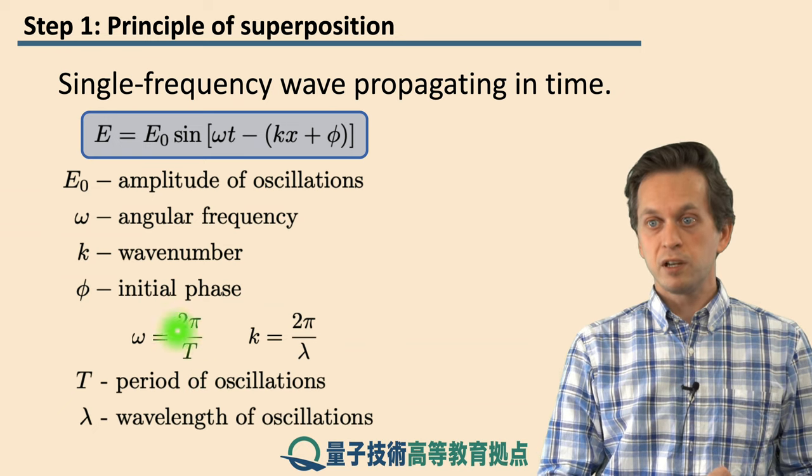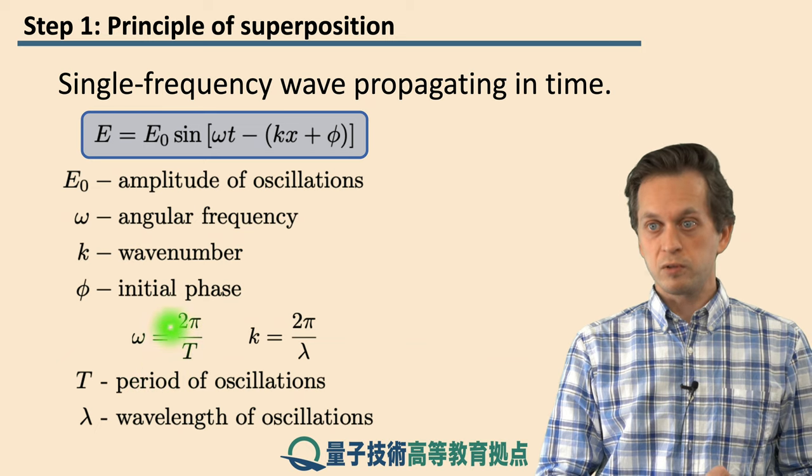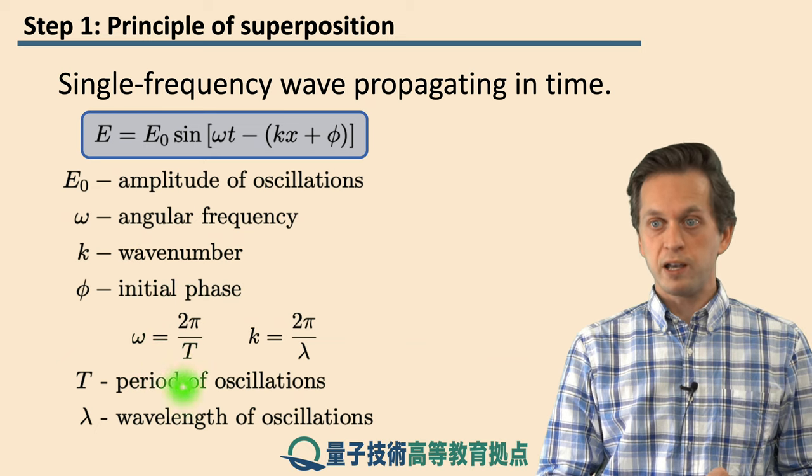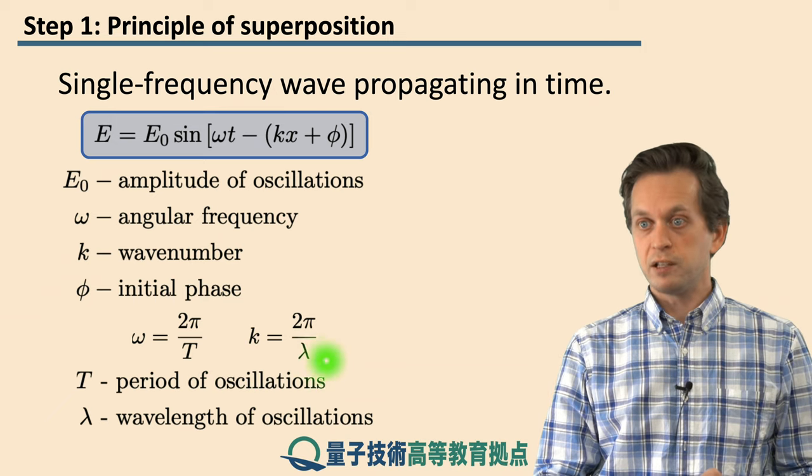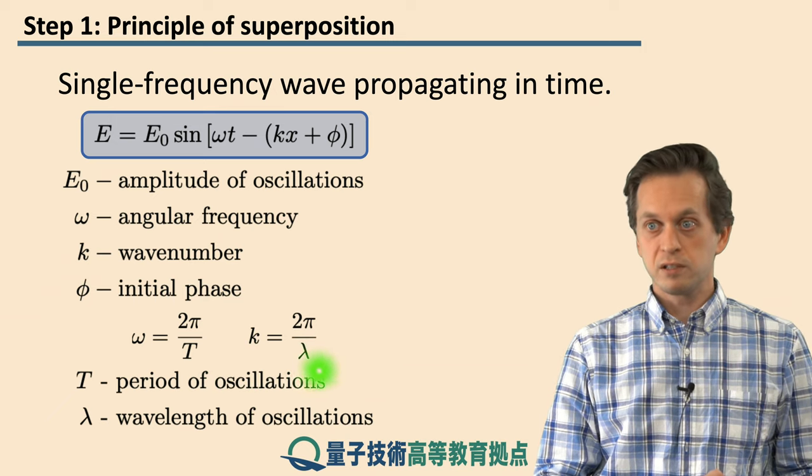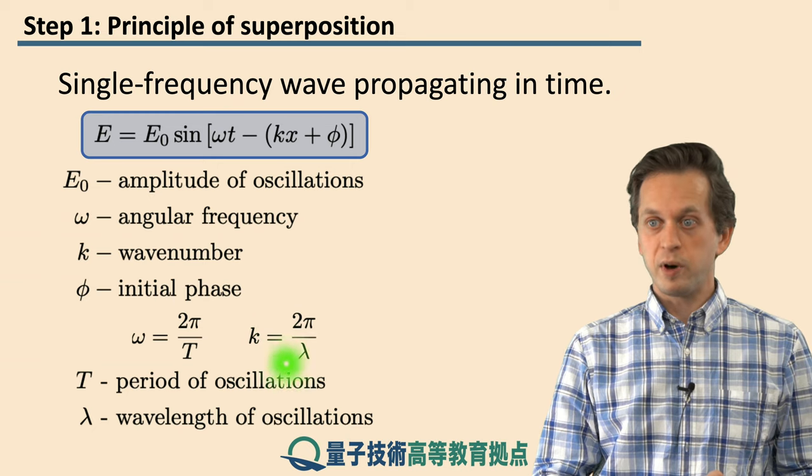So omega, the angular frequency, is related to the period of oscillations as follows. Omega is equal to 2π over T. Whereas k, the wave number, is related to the wavelength of the oscillations. And k is equal to 2π over λ.